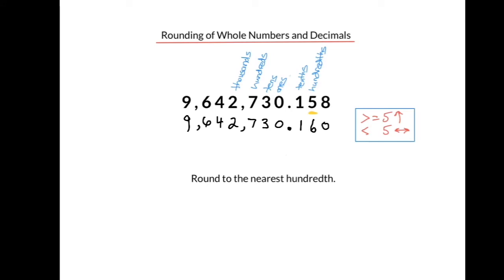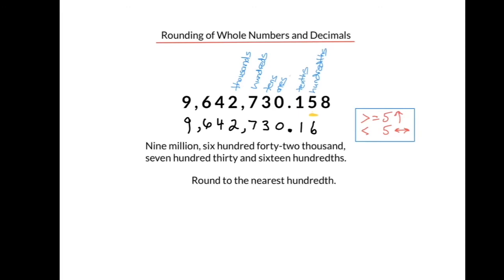Again, the 0 at the end can be removed — it doesn't change the value of the number. Here's our number rounded to the nearest hundredth: 9,642,730 and 16 hundredths.